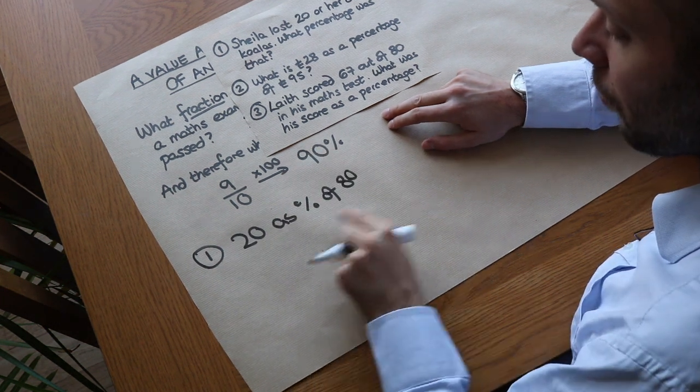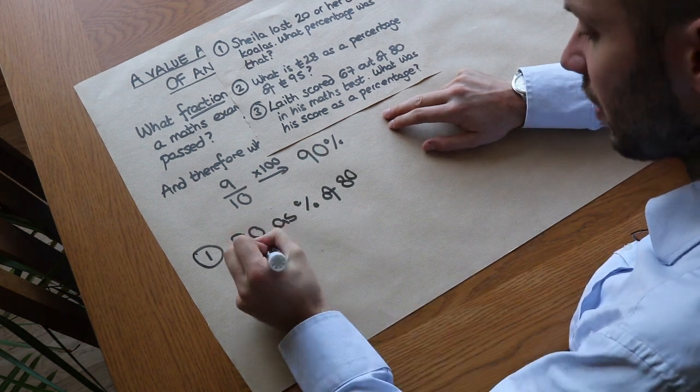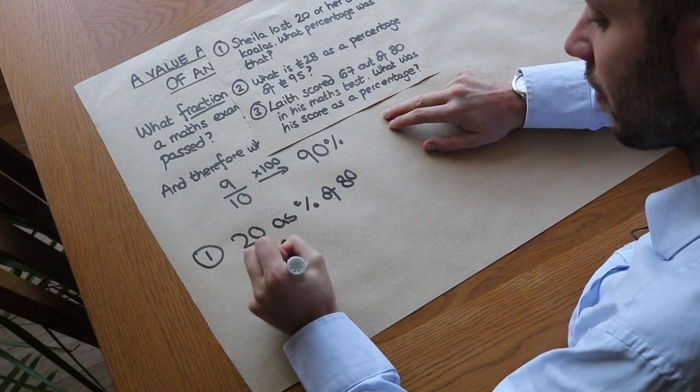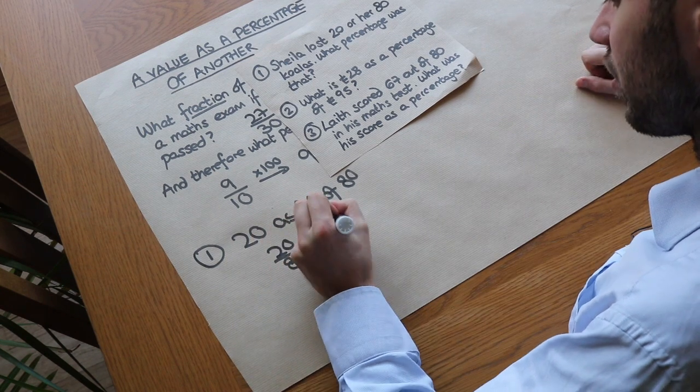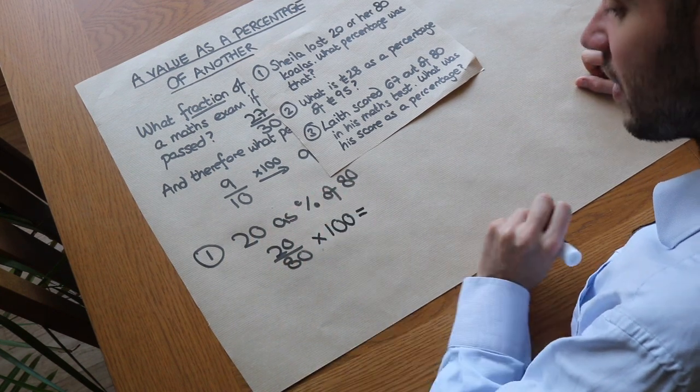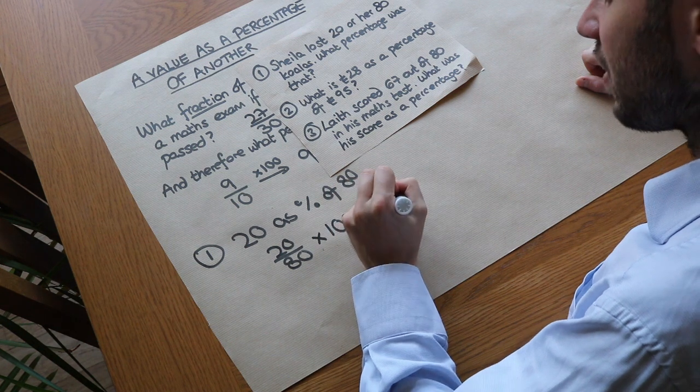So we just write what fraction 20 is of 80 first. So 20 out of 80 of her koalas were lost, and then times that by 100. And when we do that, we just get 25 percent.